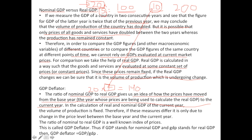That is the objective of GDP deflator. In the calculation of Real and Nominal GDP, the volume of production is fixed. Therefore, if these measures differ only due to a change in the price level, that difference shows us what the inflation rate is — and that is what GDP deflator wants to calculate. The formula of GDP deflator is the ratio of Nominal GDP to Real GDP.